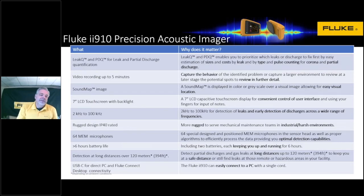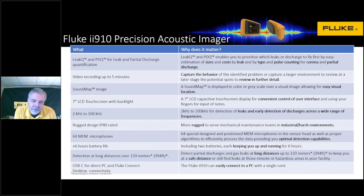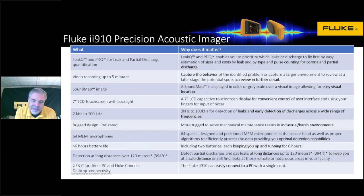The II910 still has the leak queue mode, but it also adds a PD queue mode — the ability to look at and measure PD counts, which allows us to estimate the amount of corona happening based on type and pulse sizes. The PD count is well-used within industry and it's nice that we're able to communicate the same way as everybody else using our equipment. Video recording is up to five minutes, the sound map image stays the same, same touch screen as the other device. The real interesting thing is we've been able to extend to 100 kilohertz, which gives us the ability to detect leaks earlier and discharges across wider frequencies.